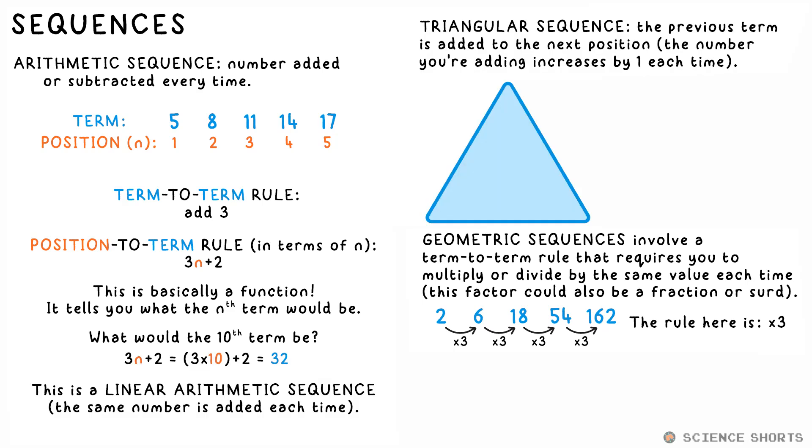A triangular sequence is one where we add on the next position to the previous term, and it can be represented by a triangle of dots. First term is one, second term is three. The third term, we take our three from the previous one and add three. So that gives us six.